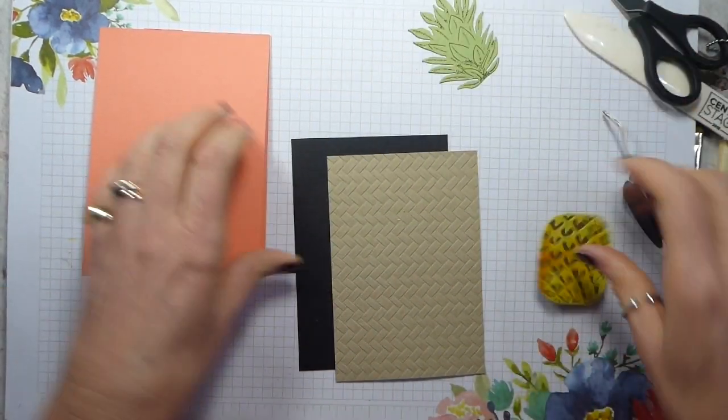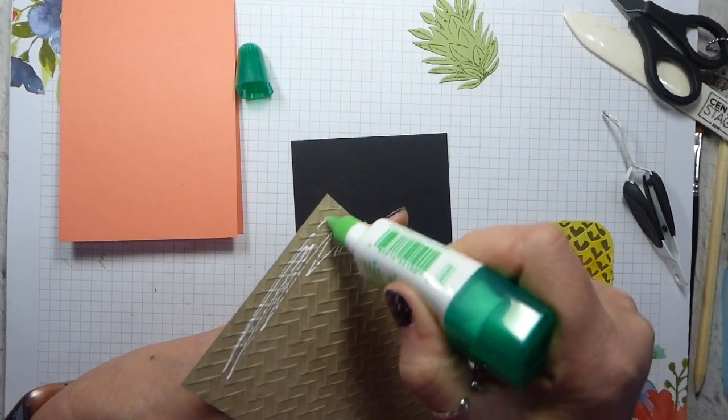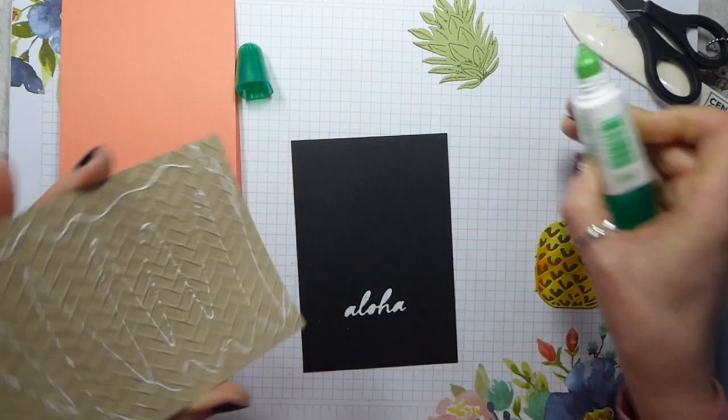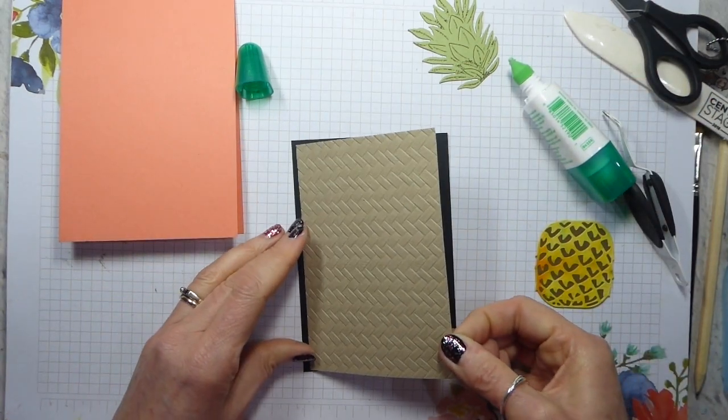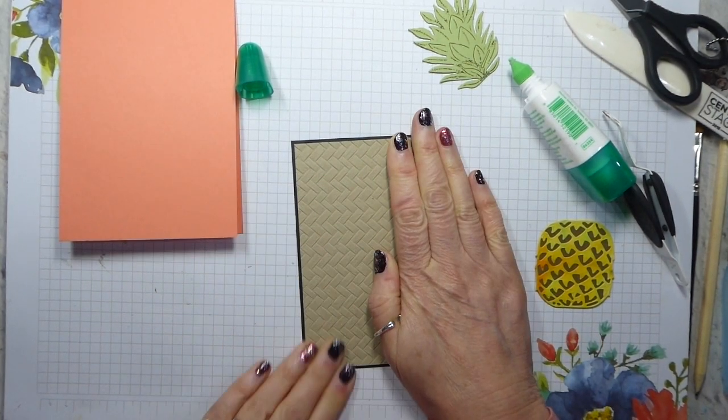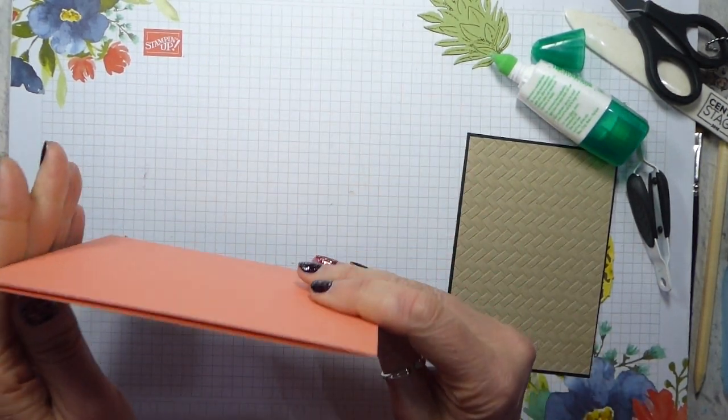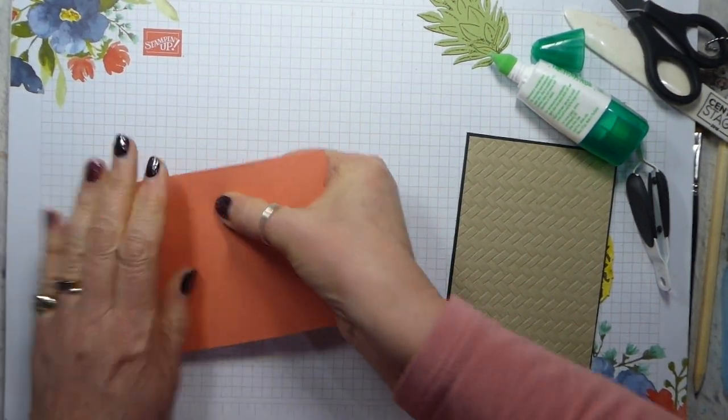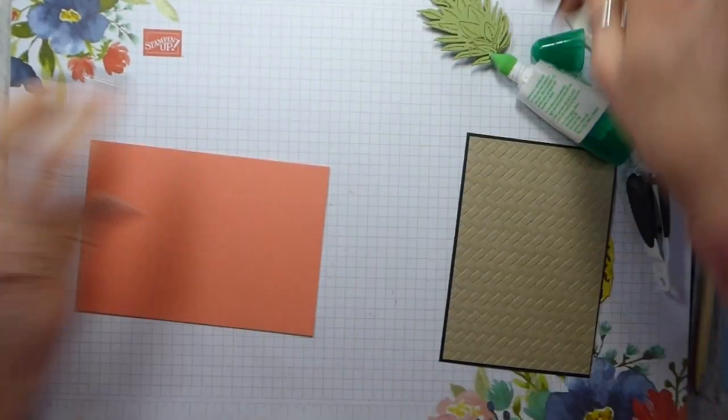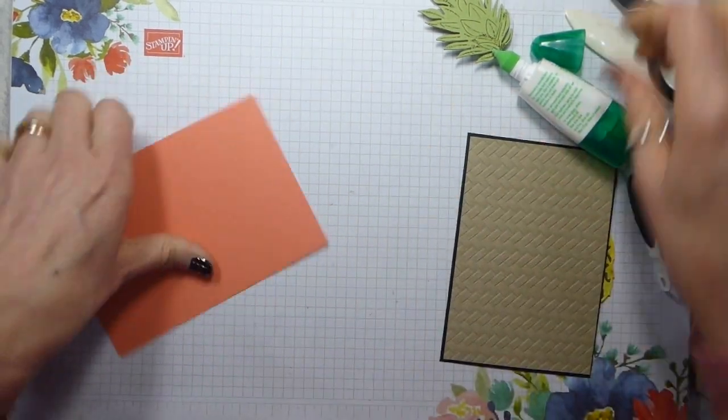Right. Let's pop that in the bin. So, fairly quick to put together. Let's add some adhesive to our basket weave. And pop that onto our mat. And then this goes onto our slightly askew card base. Let's sort that out. Because I don't like askew. That's better. A bit better. Let's try that. That's it.